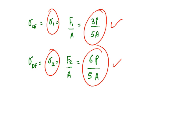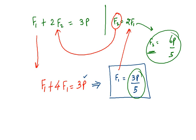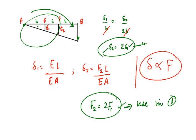After finding sigma 1 and sigma 2, if you are required to find the elongations, you can substitute the values of F1 and F2 into the stress-strain equations and find the elongations delta 1 and delta 2.